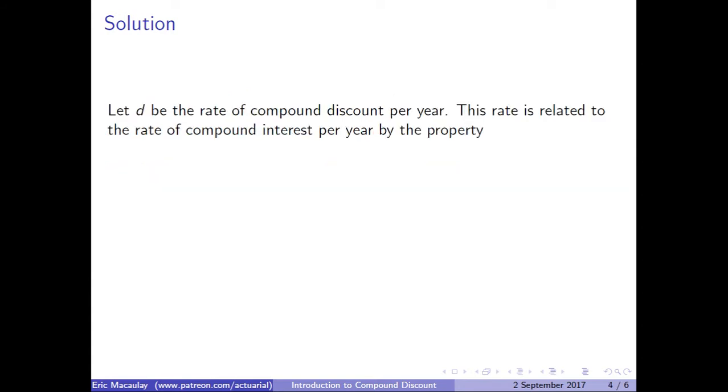Let D be the rate of compound discount per year. This rate is related to the rate of compound interest per year by the property (1 + i) times (1 - d) equals 1.